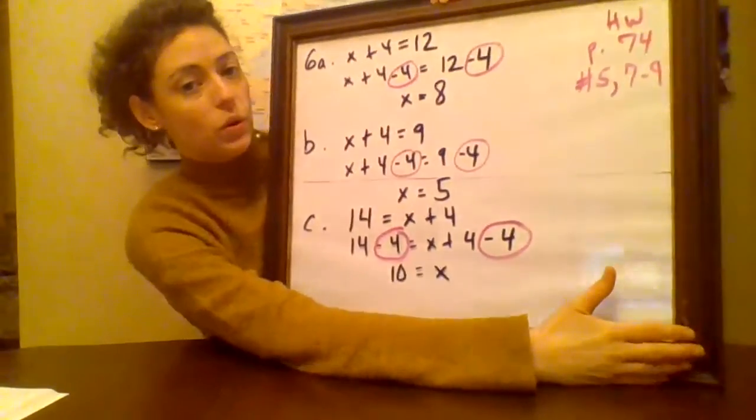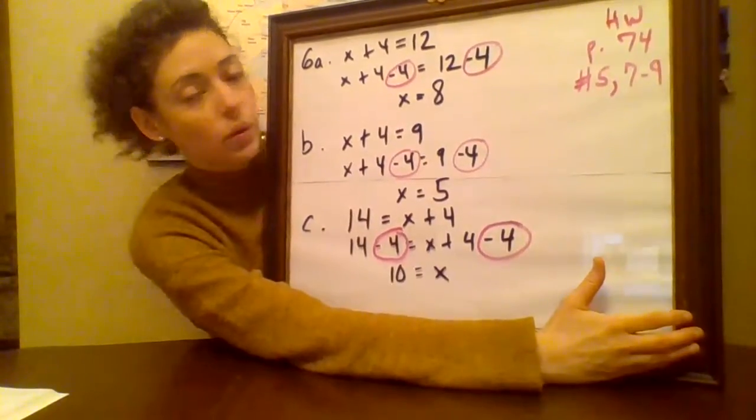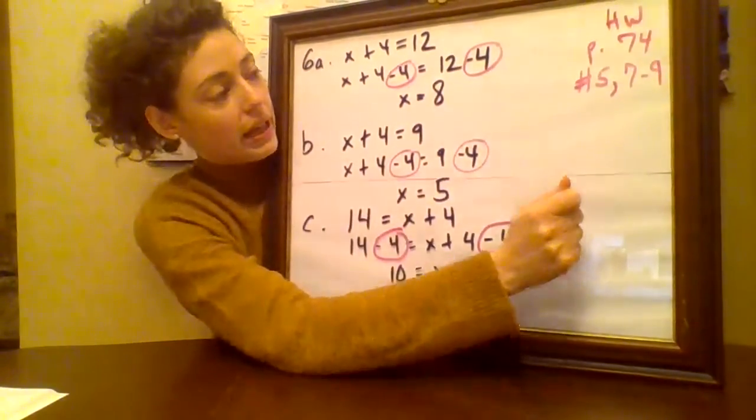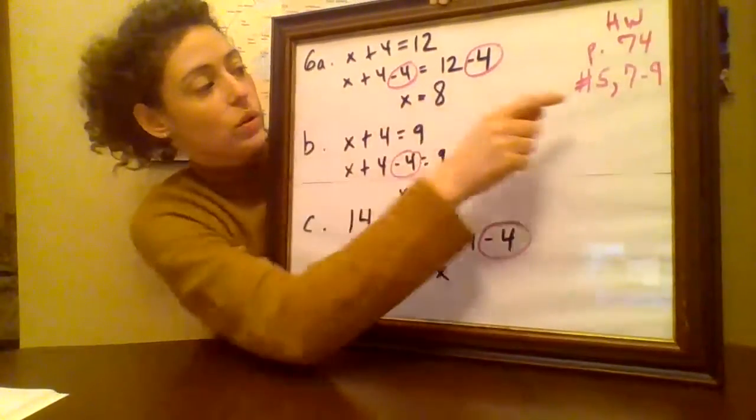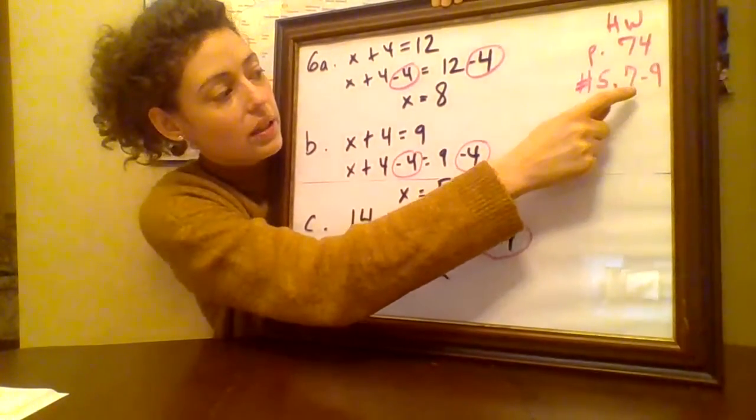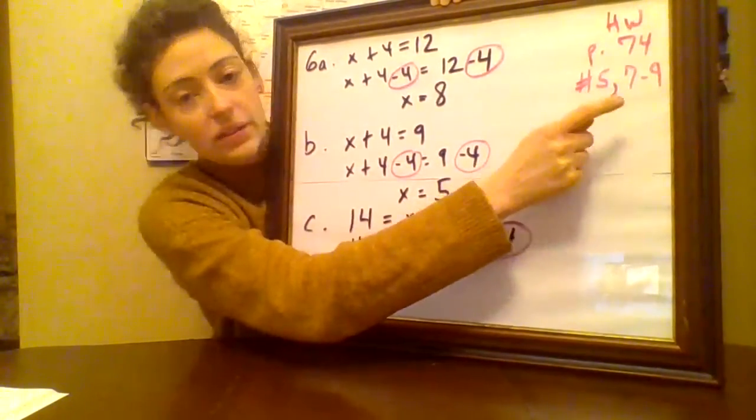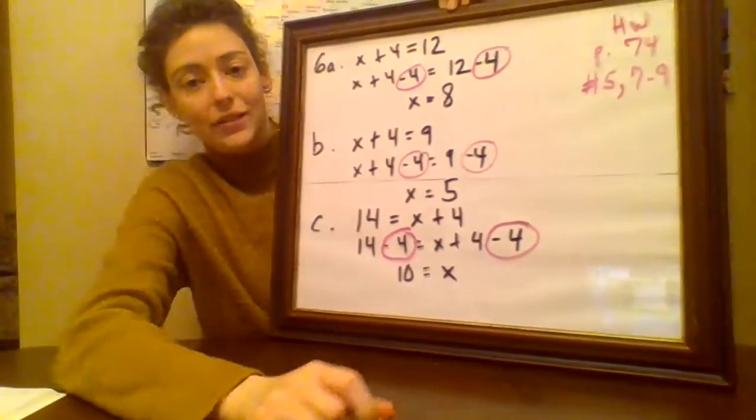So you're going to keep going on to the next page, which is page 74. And we've done six together here. So you can do numbers five and seven to nine. So five, seven, eight, nine. Have a great day.